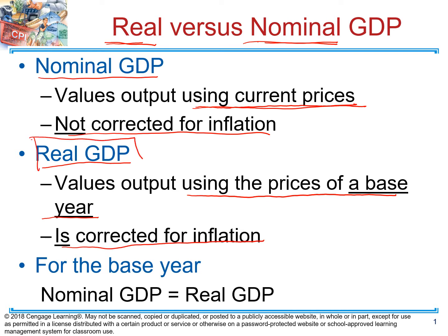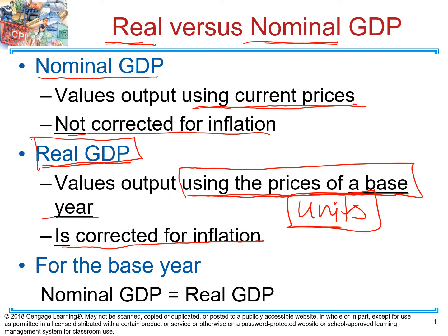Why do we calculate real GDP by keeping prices constant at a base year? Because when we take the inflationary effect out of the picture, we better understand how much more goods and services we produce — taking into consideration the number of units produced in our economy. So when we calculate GDP and see that it increased, we know it increased only because we produced more goods and services.